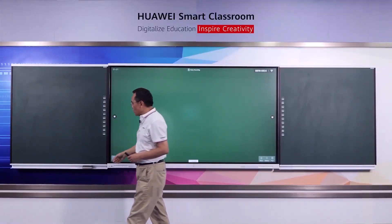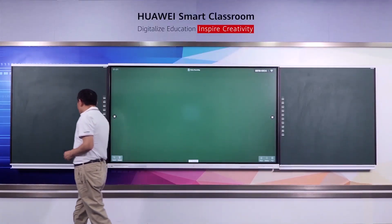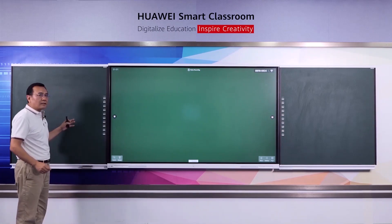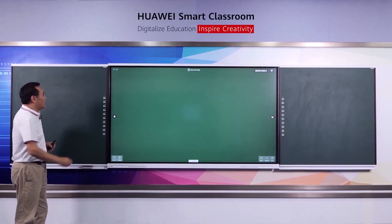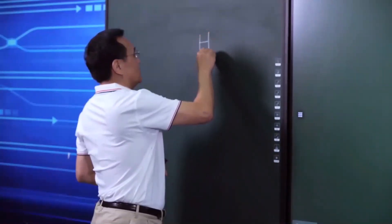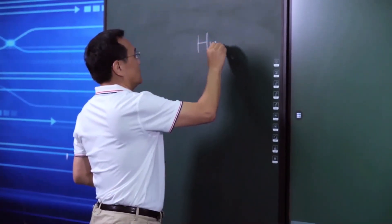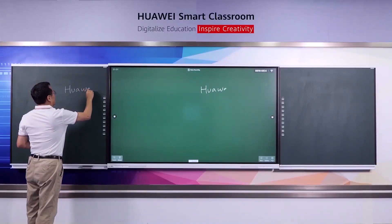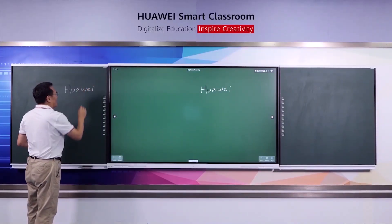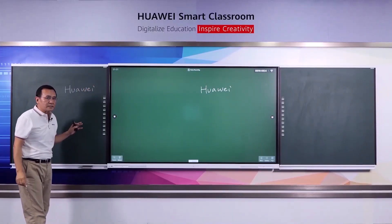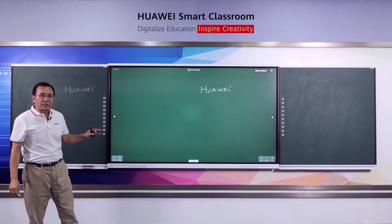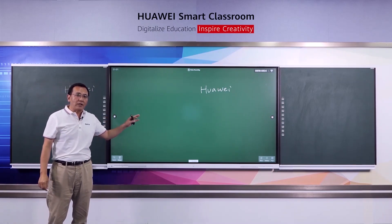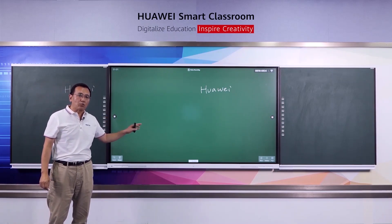Now I use the chalk to write letters on the blackboard. You can see the letters synchronize with the Ideal Hub big screen.